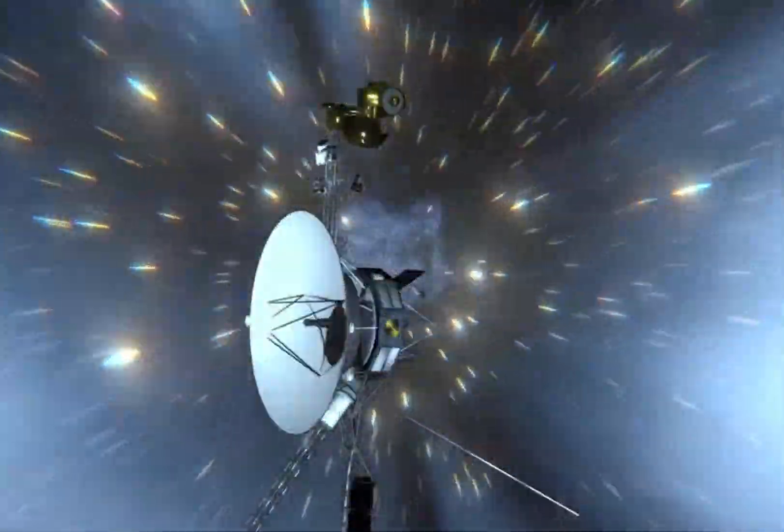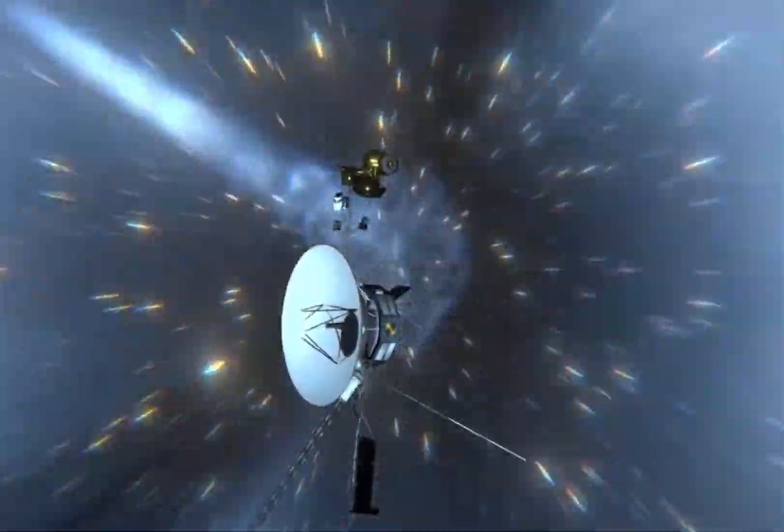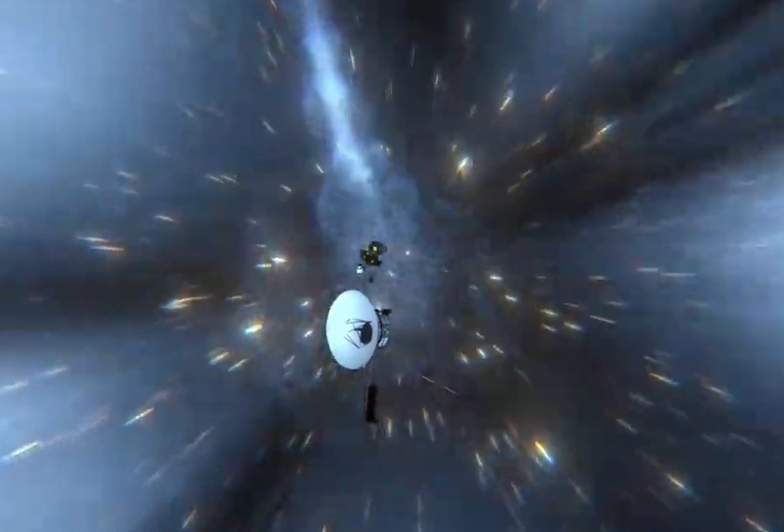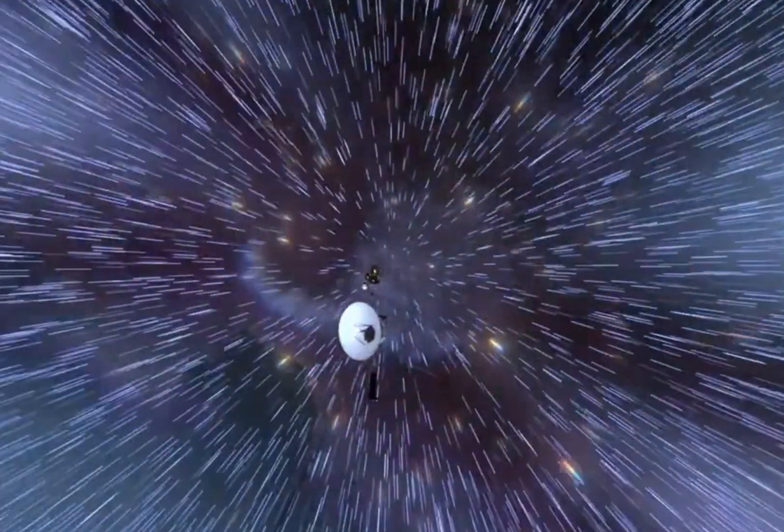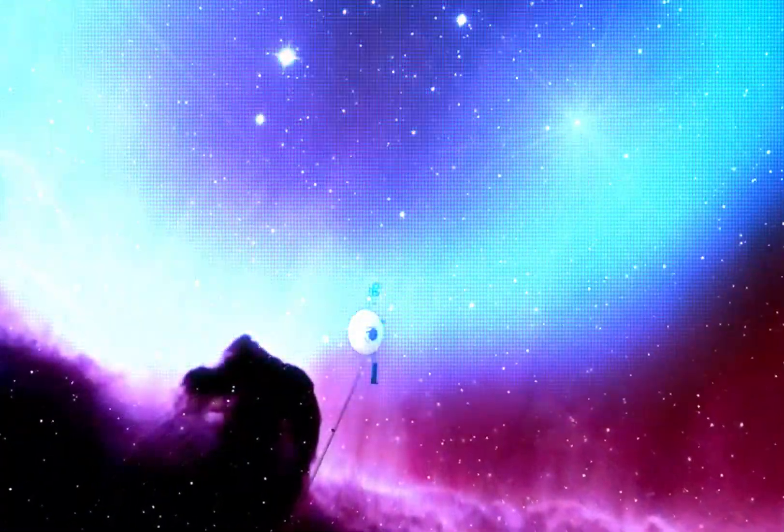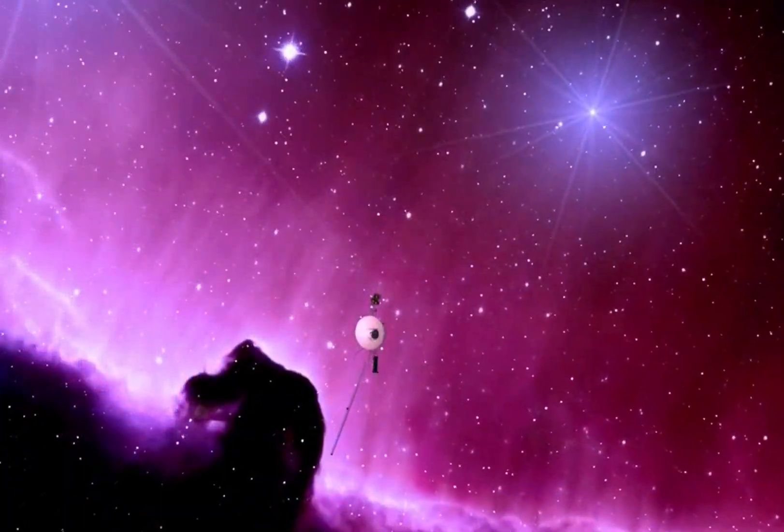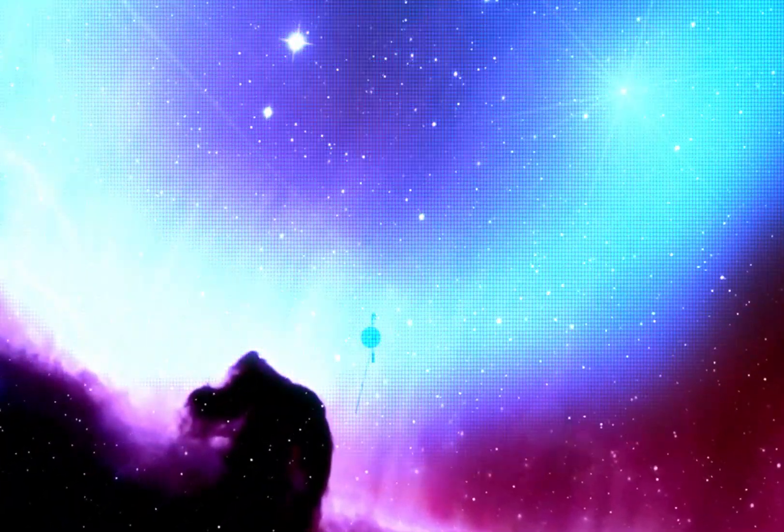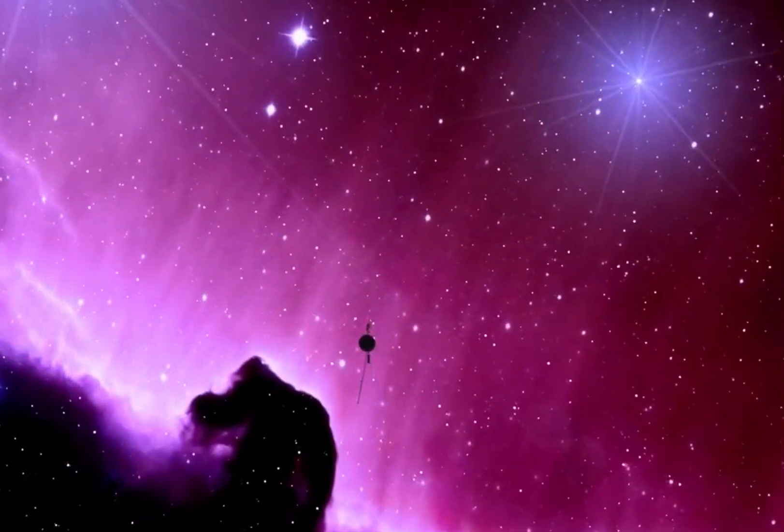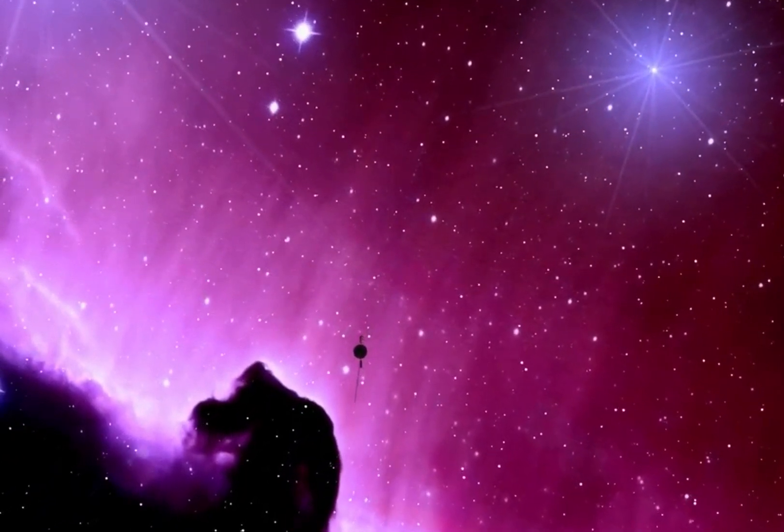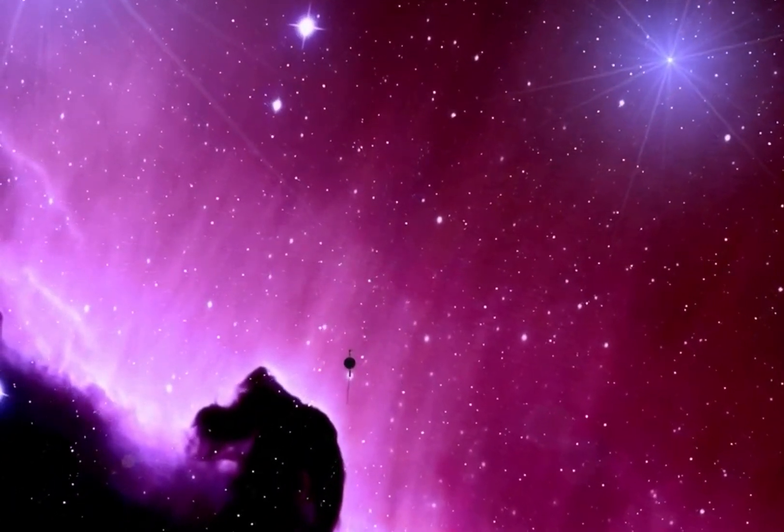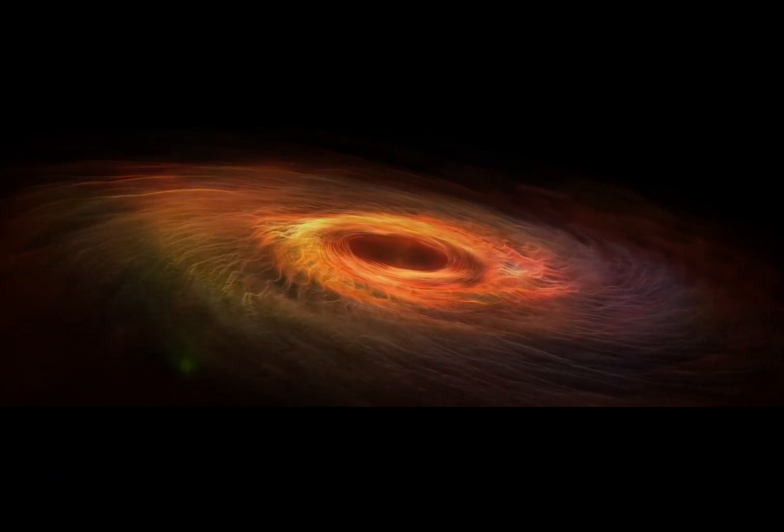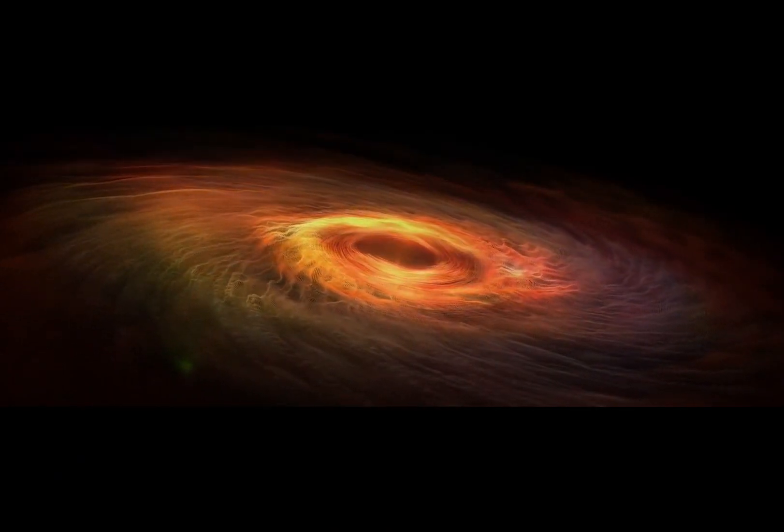In recent years, NASA instruments have painted a new picture of these strange objects that are to many the most fascinating objects in space. The idea of an object in space so massive and dense that light could not escape it has been around for centuries. Most famously, black holes were predicted by Einstein's theory of general relativity, which showed that when a massive star dies, it leaves behind a small, dense remnant core. If the core's mass is more than about three times the mass of the sun, the equations showed the force of gravity overwhelms all other forces and produces a black hole.